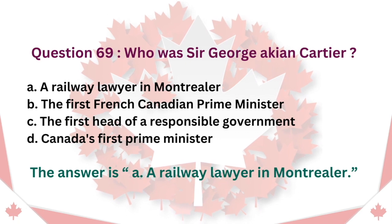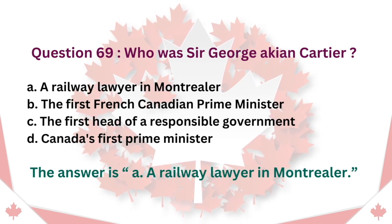Question 69: Who was Sir George Étienne Cartier? A. A railway lawyer in Montreal. B. The first French Canadian Prime Minister. C. The first head of a responsible government. D. Canada's first Prime Minister. The answer is A. A railway lawyer in Montreal.